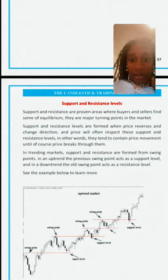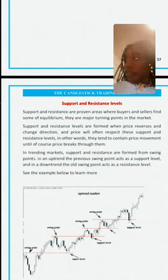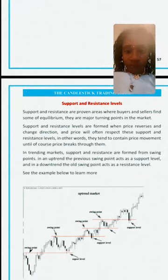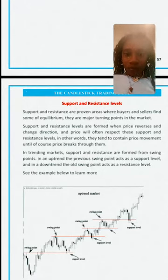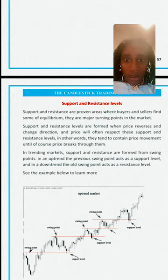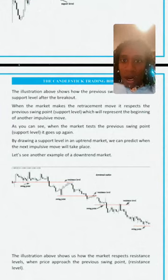In a downtrend market, you can still see the swing points and how the market was testing these levels. The purpose of these levels is so that you know which levels the market respects. And don't forget — you can download this on Google.